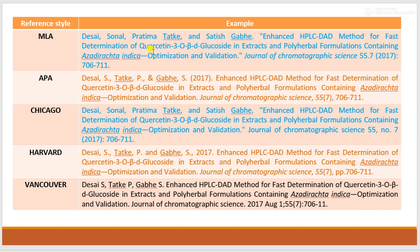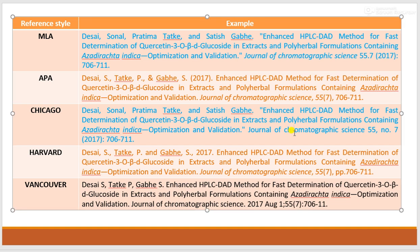One reference is presented in five different styles. In MLA, the surname is given first, followed by the given name, then the title of the manuscript or paper, followed by the journal name in italics, then the volume number, issue number, and year of publication in brackets, followed by the page number. MLA and Chicago are almost the same; the difference is that in Chicago the journal name is not in italics, and the issue number is written explicitly as a number.